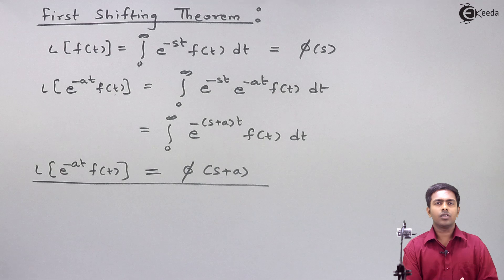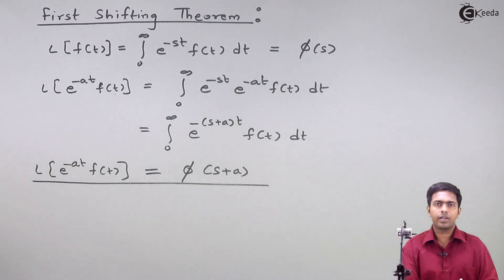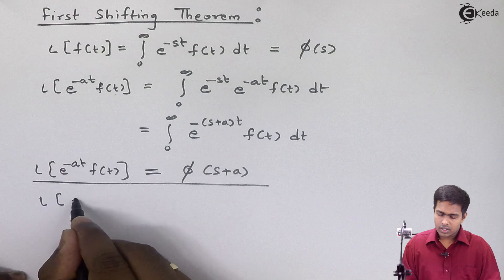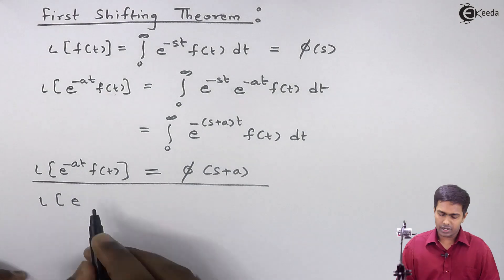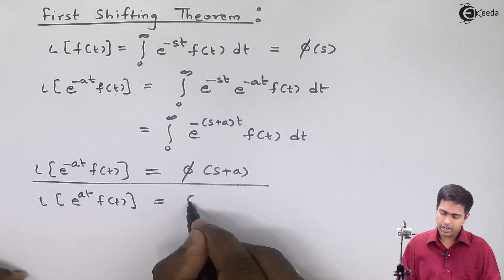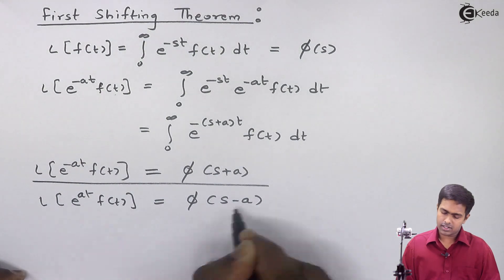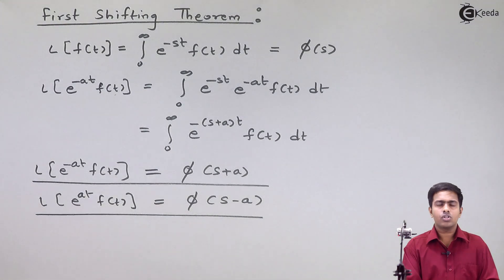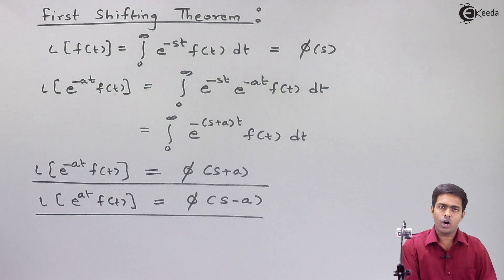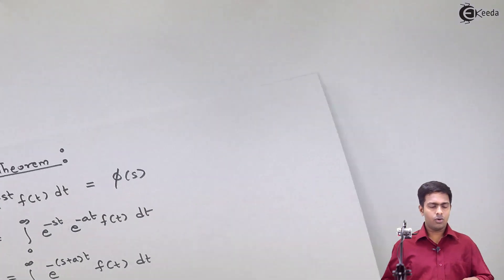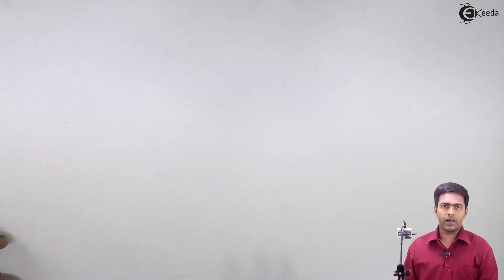This is the first shifting property. Similarly, if the exponent is positive — that is, e raised to plus at — we get phi of s minus a. We will use these two properties to solve a few problems of Laplace transform.